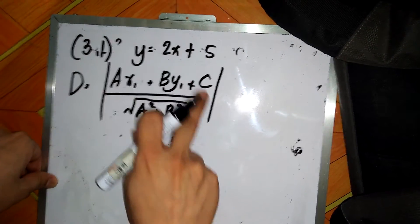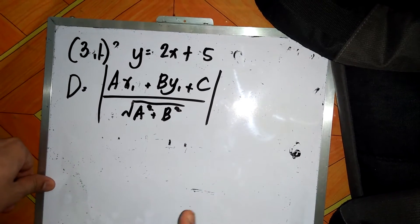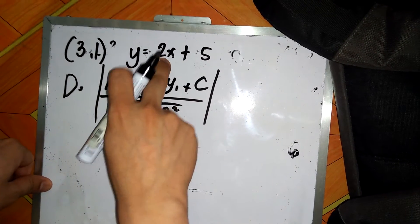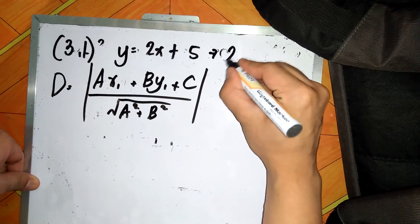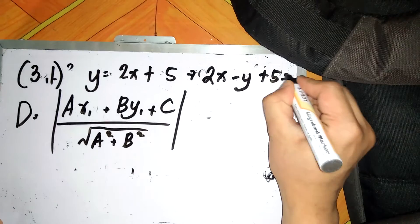The b is the coefficient of y and c is the constant. But you need first, so this is a reminder, you need first to convert this equation to general form. So this will become 2x minus y plus 5 equals 0.